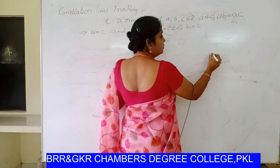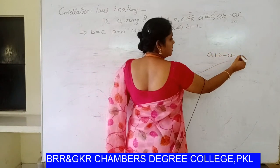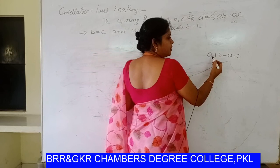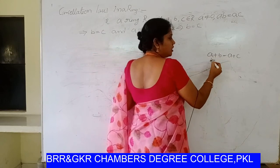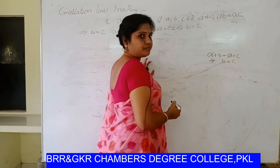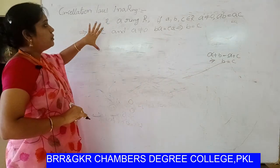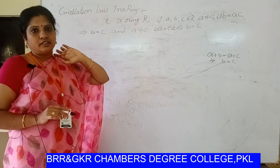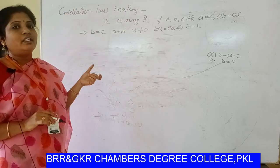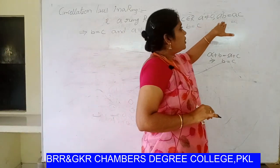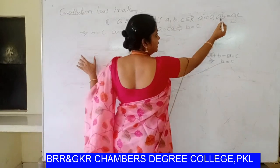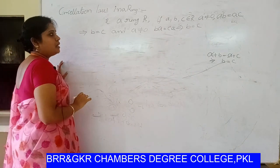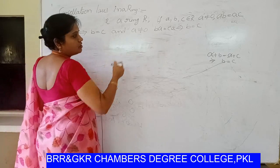Here we are mentioning cancellation laws with respect to multiplication. The binary operation is multiplication. Therefore the cancellation laws say: ab equal to ac implies b equal to c, and ba equal to ca implies b equal to c.